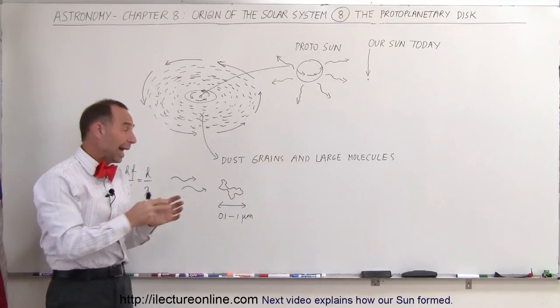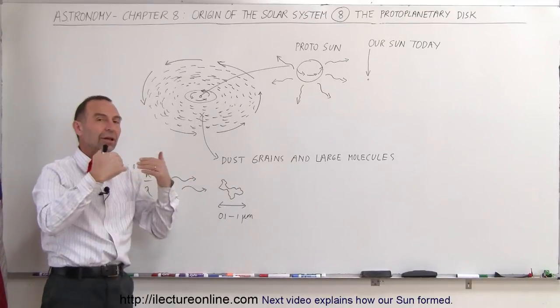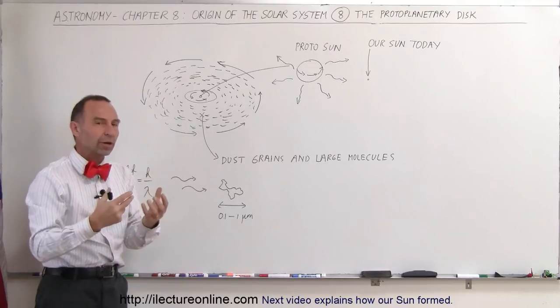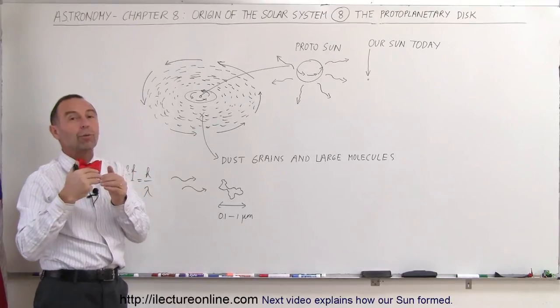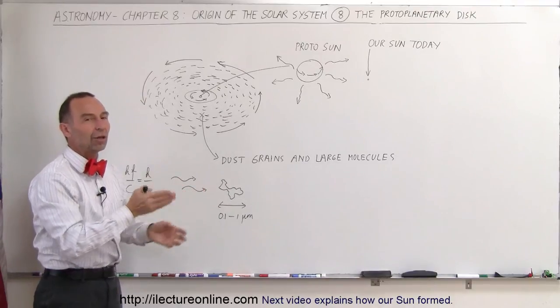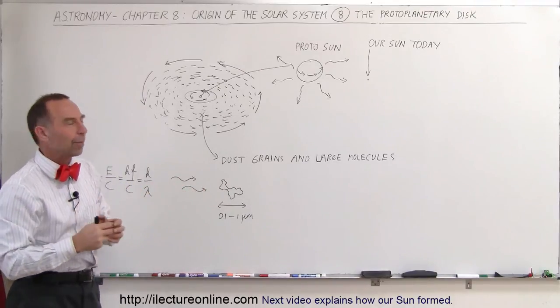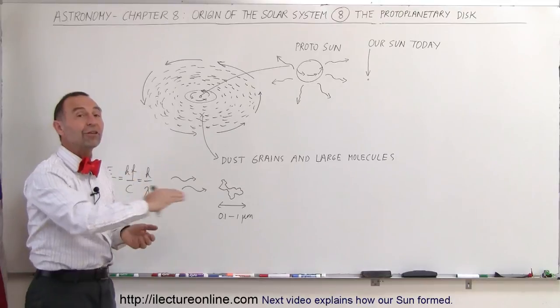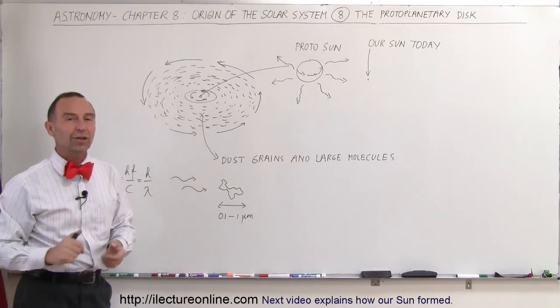On the next stage we're going to see what happens to the dust grains, how they then evolve into larger and larger particles, and eventually they would form what we then know as the planetesimals, which then eventually would form the planets. So in the next video we'll talk a little bit more about what happens in the next stage and what eventually formed the planets in the solar system.